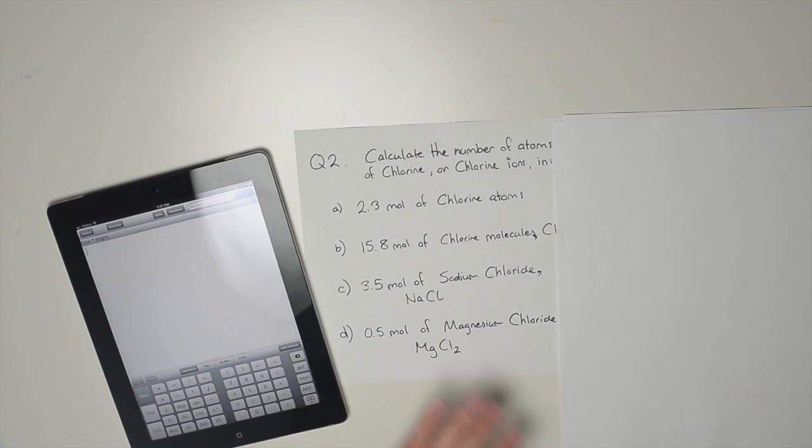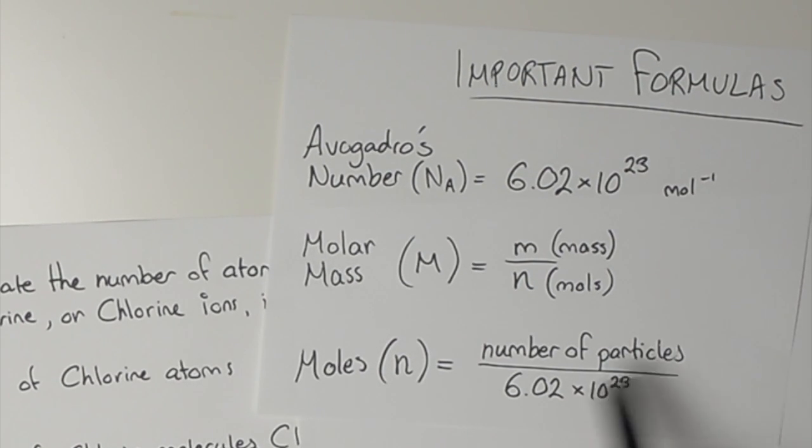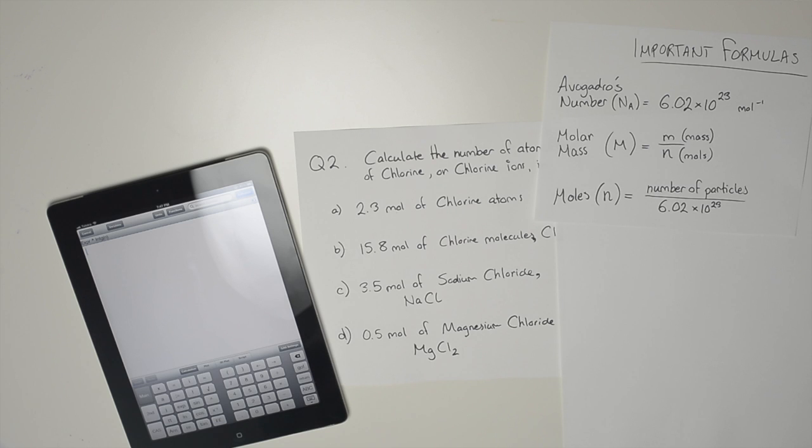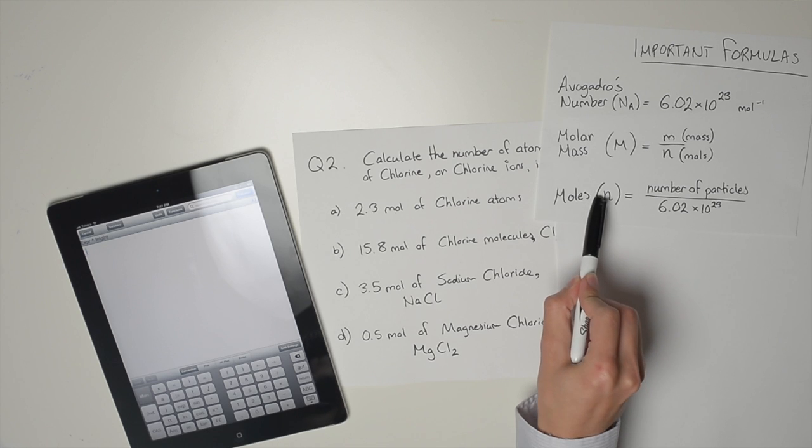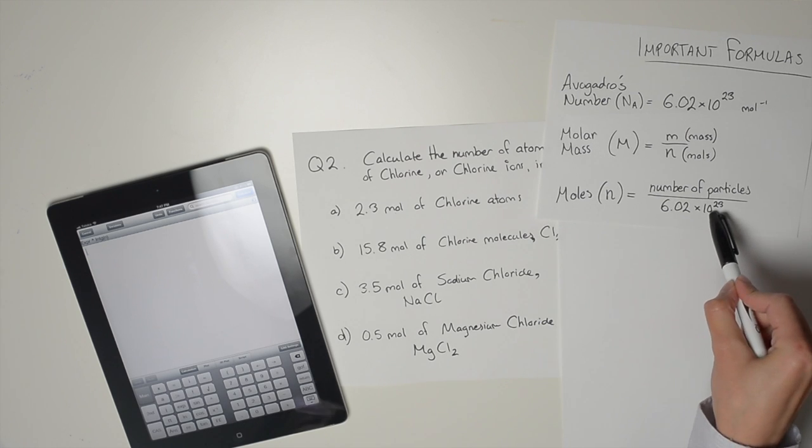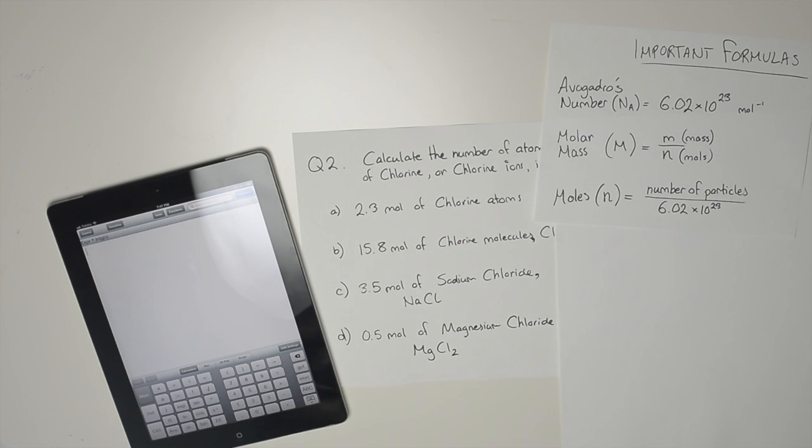You could use this formula here. Moles equals the number of particles divided by Avogadro's number, and then rearrange the equation. Because it's telling you the number of moles, you stick it into the left hand side. You already know Avogadro's number, and you can just rearrange the equation to solve for the unknown, which is the number of particles.